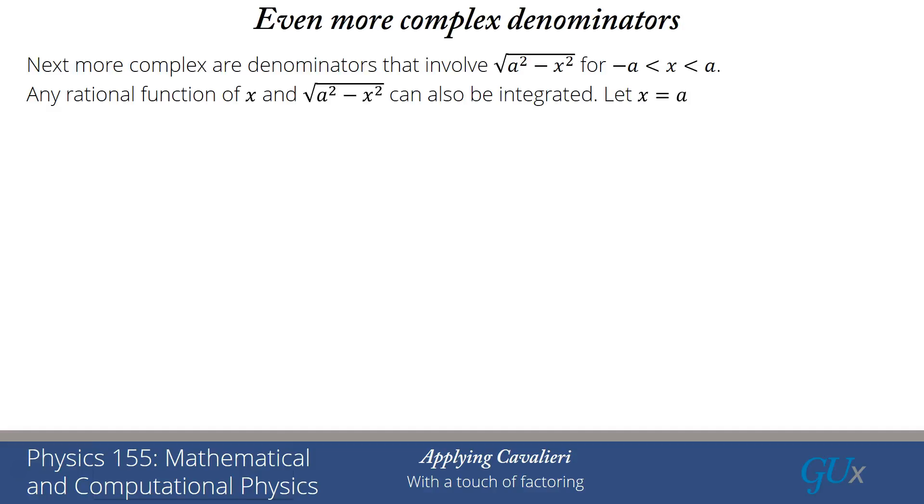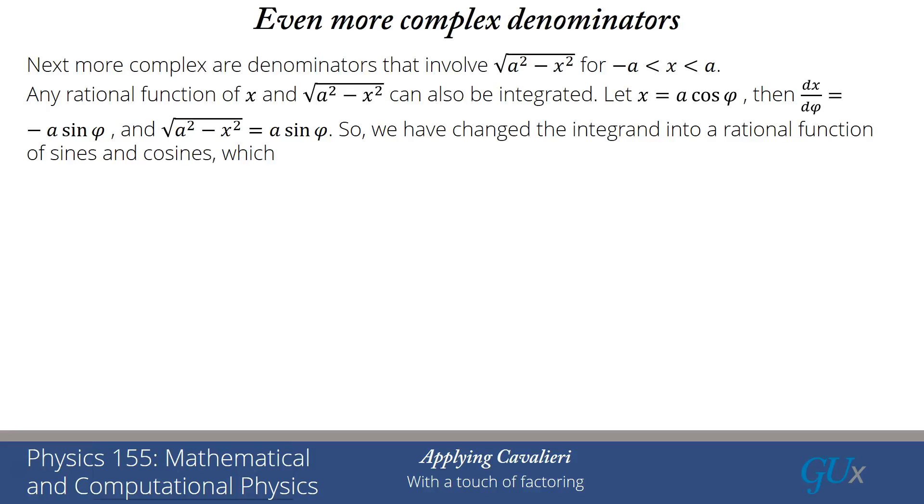On to even more complex cases. What if we have a situation where the denominator involves a square root? Let's look at √(a² - x²). We're going to limit x to be absolute value less than a for this. Any rational function of x and √(a² - x²) can also be integrated. All we have to do is let x = a cos φ and dx/dφ = -a sin φ. And √(a² - x²) = a sin φ. By plugging into that rational function, we've now converted it into a rational function of sines and cosines. We just showed that any rational function of sines and cosines can be integrated by converting to this t representation. Very, very tedious, very easy to make mistakes. So much better for a computer to do it for you, but in principle these all can be integrated.